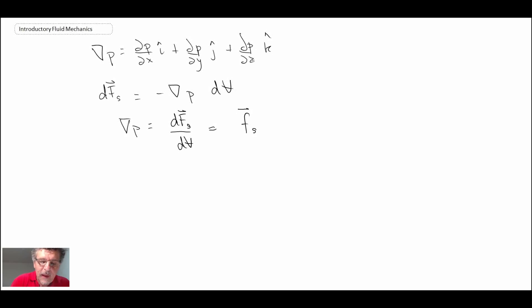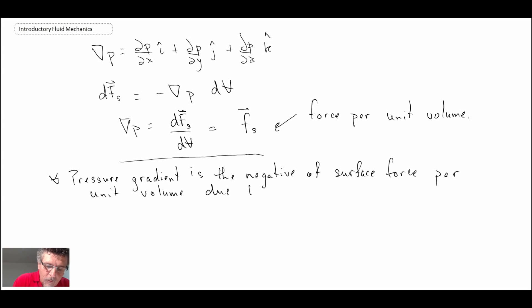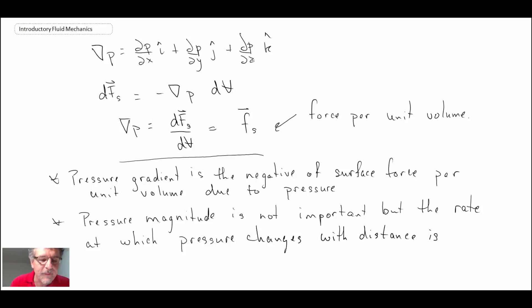Just like in thermodynamics when you have intensive properties, little f will denote force per unit volume. That is the equation, the beginning of the equation for fluid statics. We have to look at a couple of other things, body forces as well as any shear that might be within the fluid. The pressure gradient is the negative of surface force per unit volume. The other thing is that the pressure magnitude itself is not what is important. What is really important is the change in pressure with distance, and that is what the gradient operator tells us.